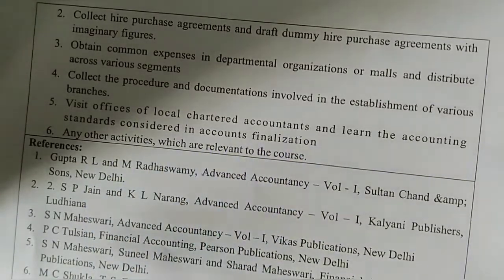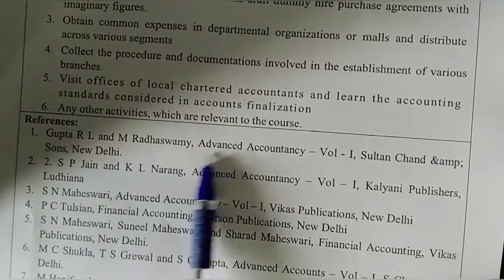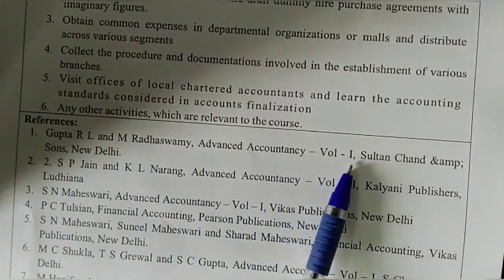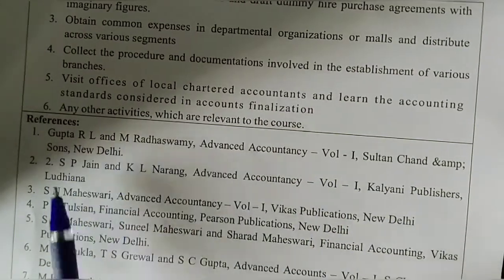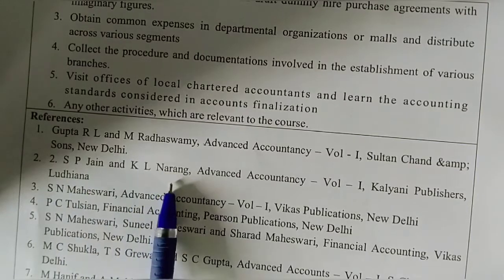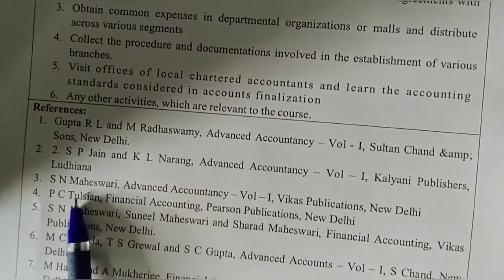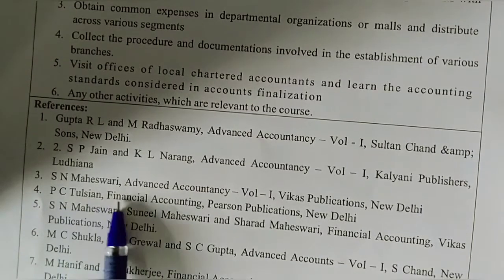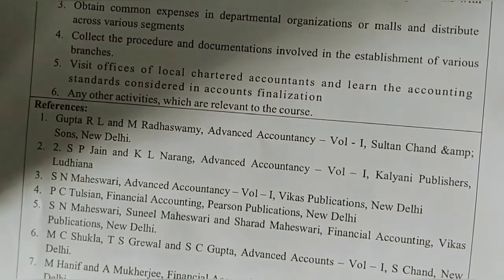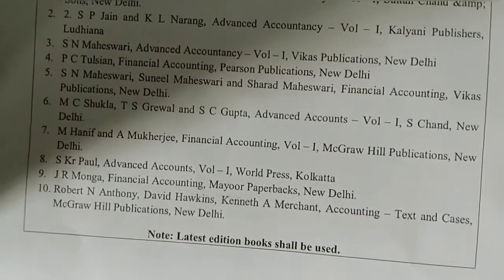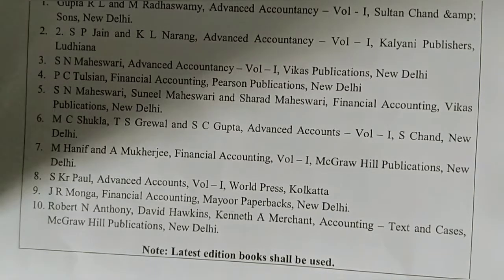Some textbook references are given here: Advance Accountancy Volume 1 by Sultan Chand, authored by Gupta R.L., S.P. Jain, and K.L. Narang; Advance Accountancy Volume 1 by Kalyani Publishers, authored by P.C. Tulsian; Financial Accounting by Pearson Publications, New Delhi. Any latest edition of these books may be used.